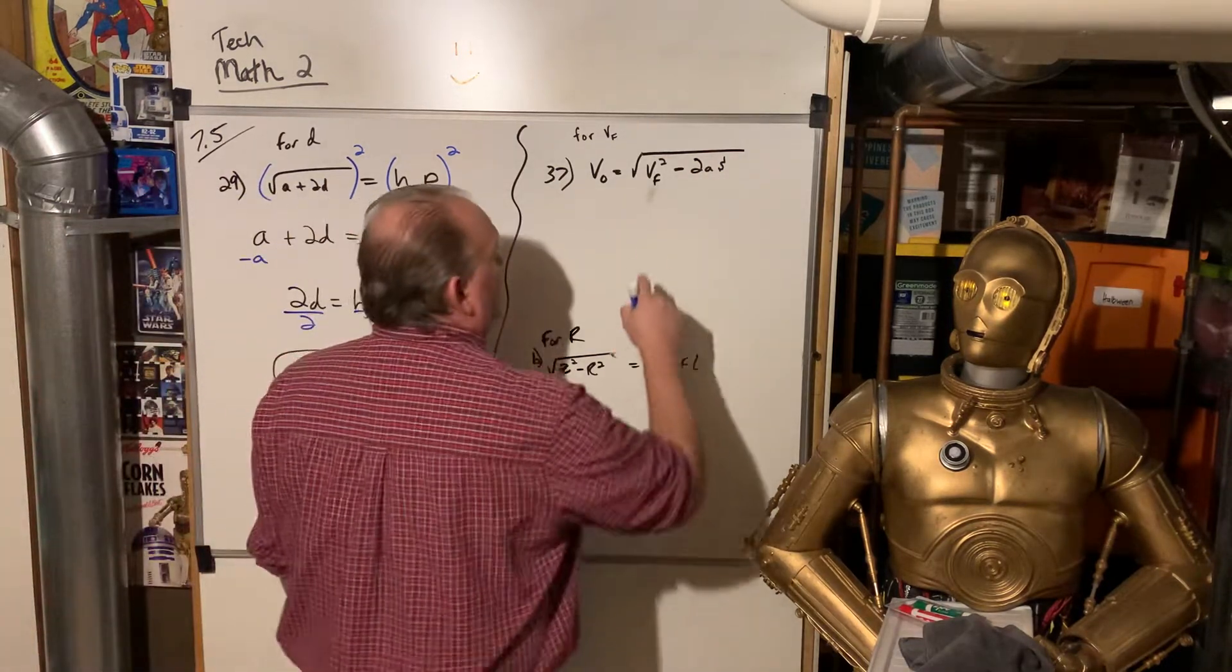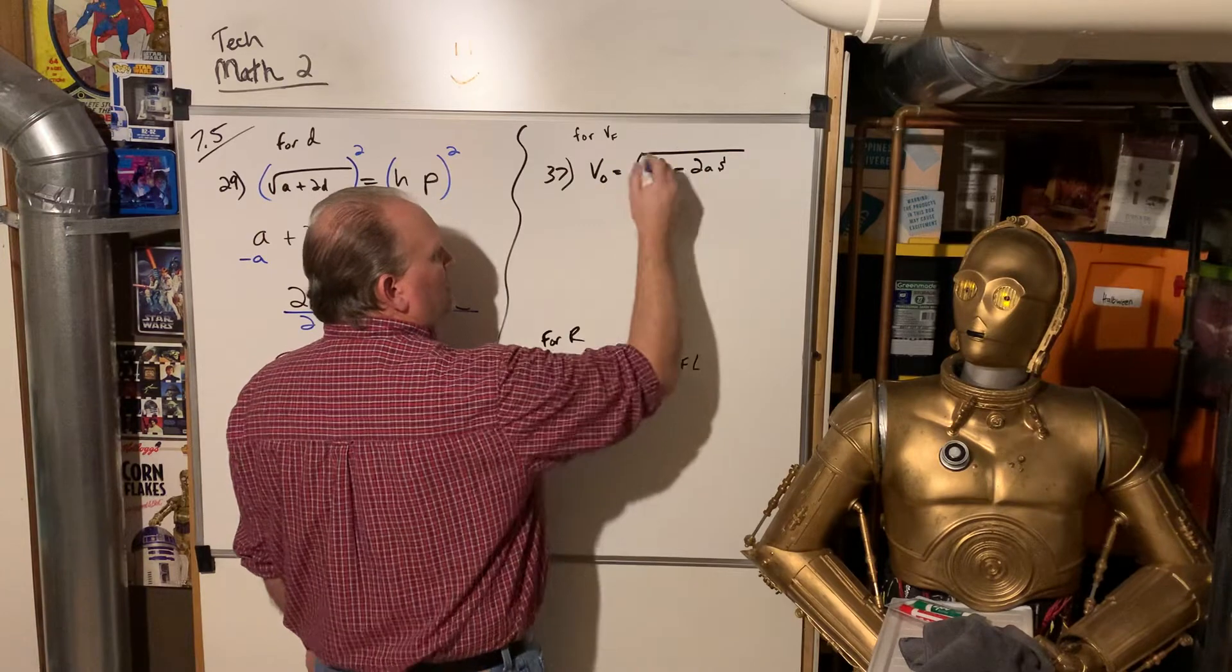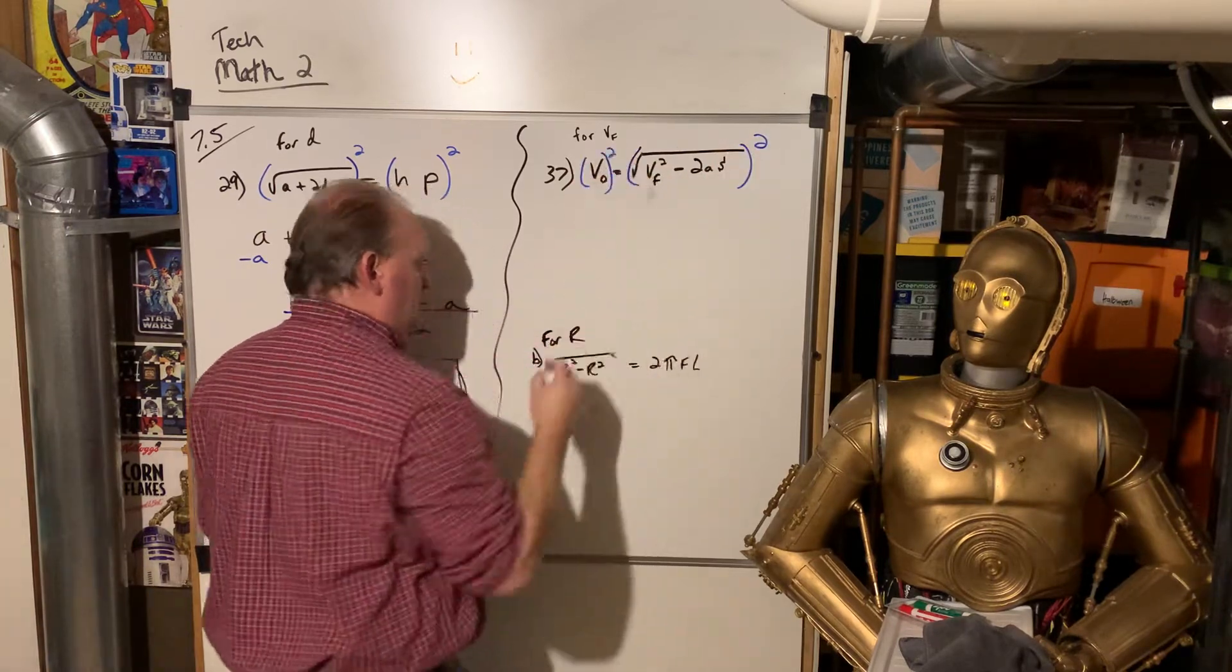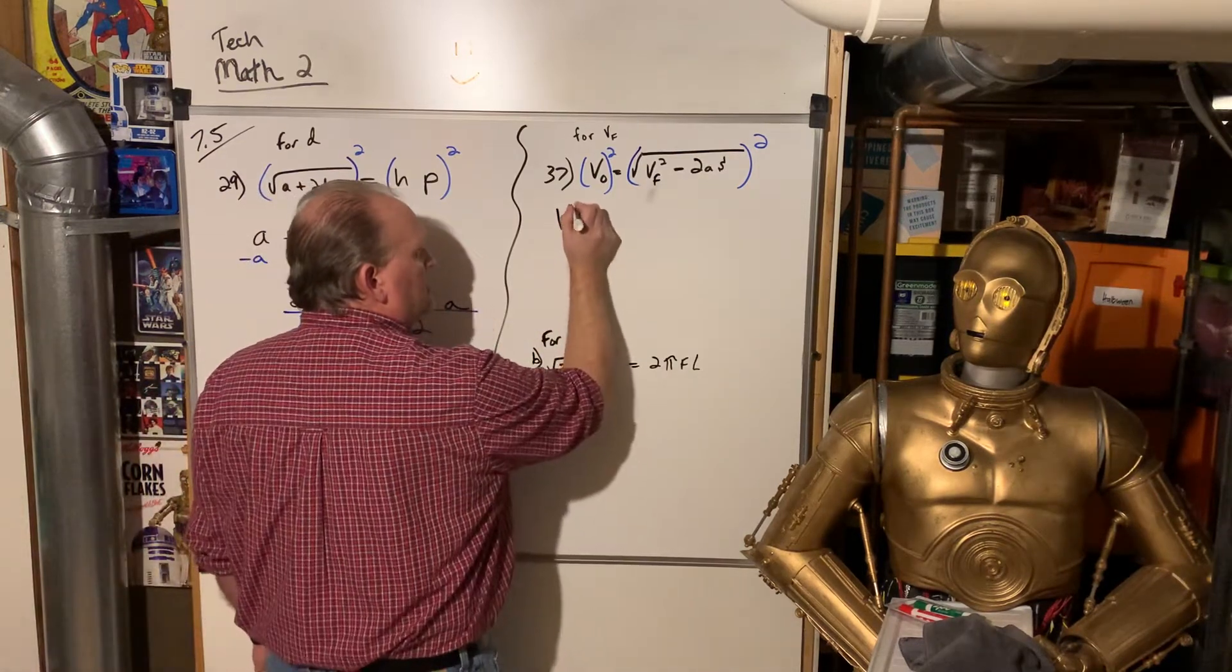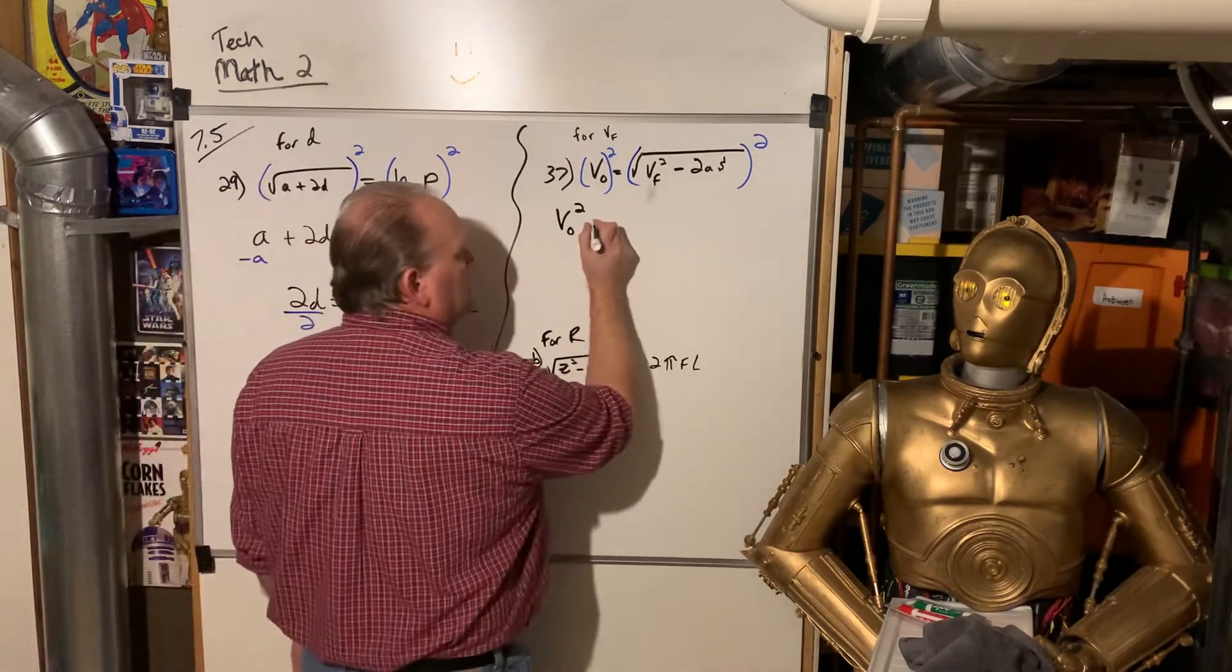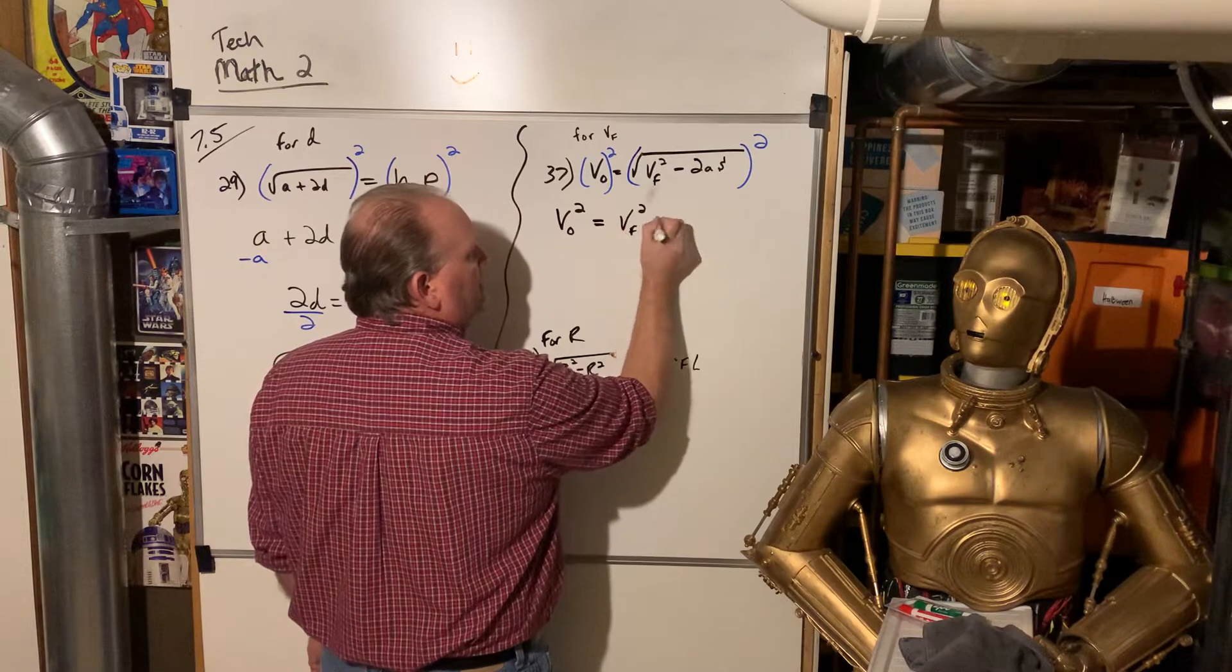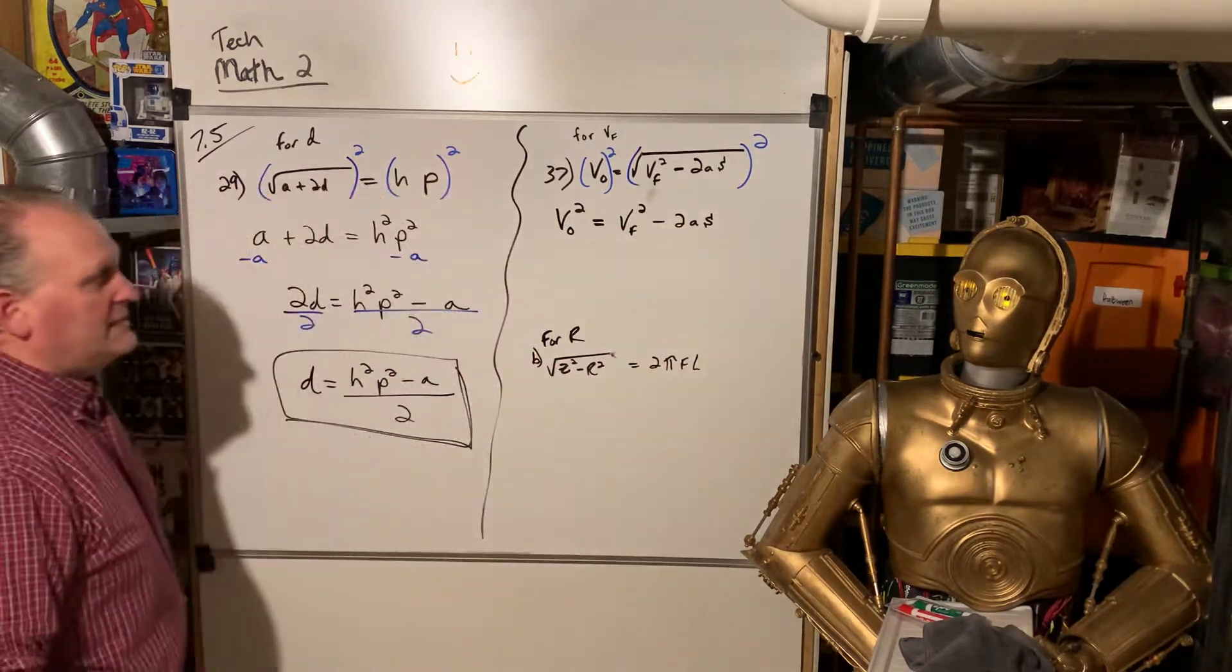This time, they have V sub F squared. That's what they want us to solve for. Again, we're going to square both sides of the equation. V naught squared. That's just V sub zero. It's pronounced V naught. This gets that stuff out.